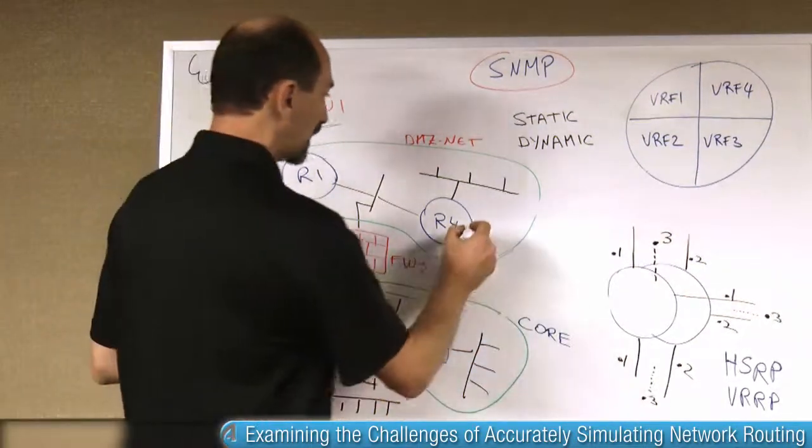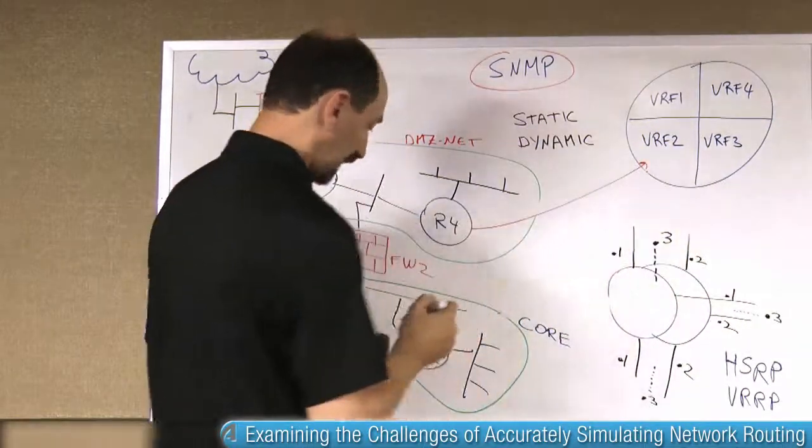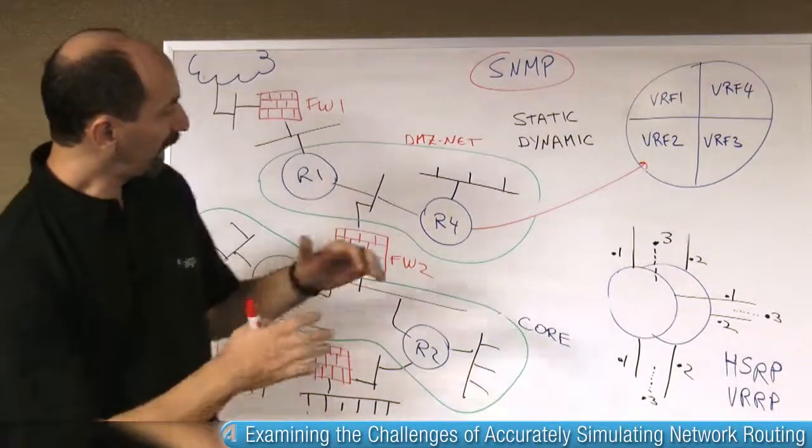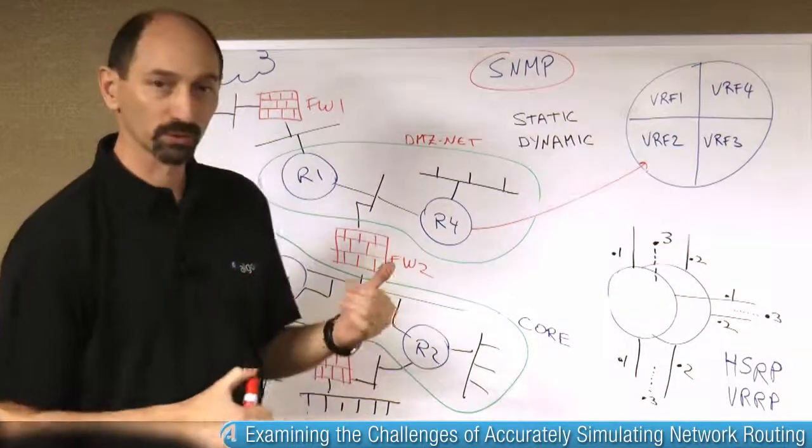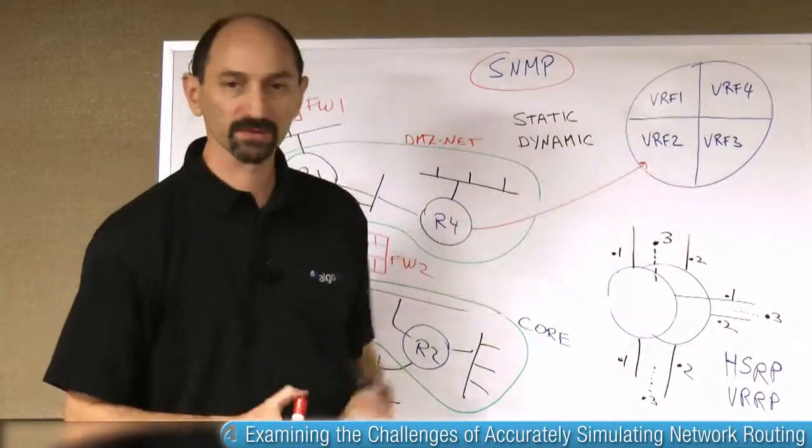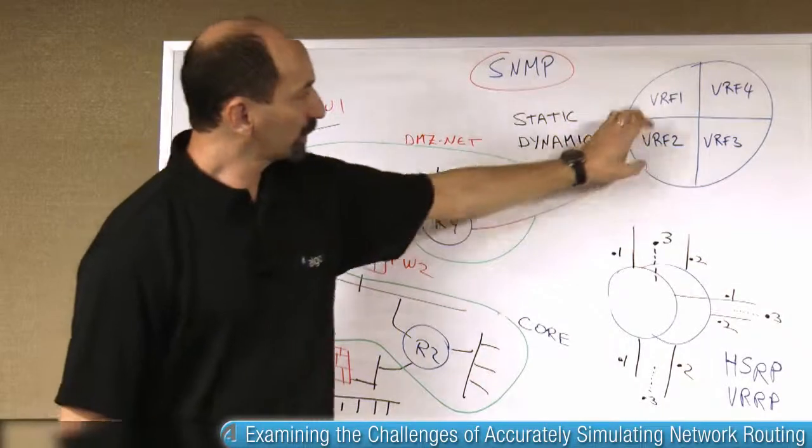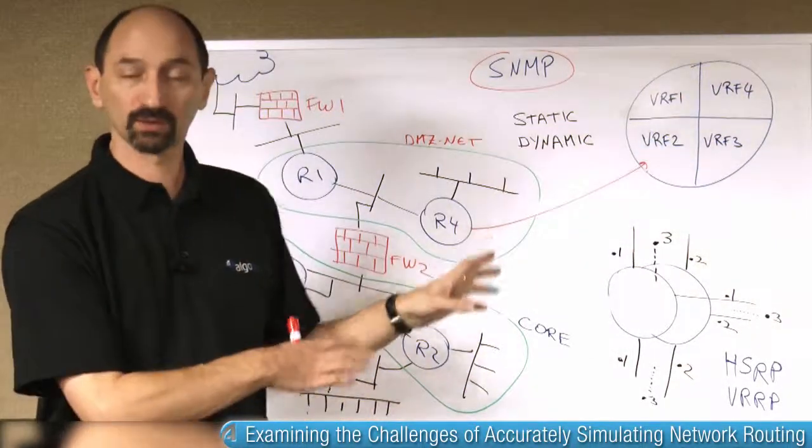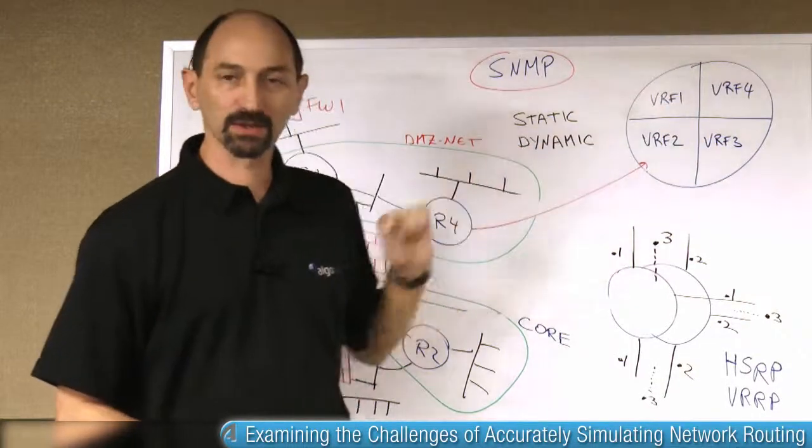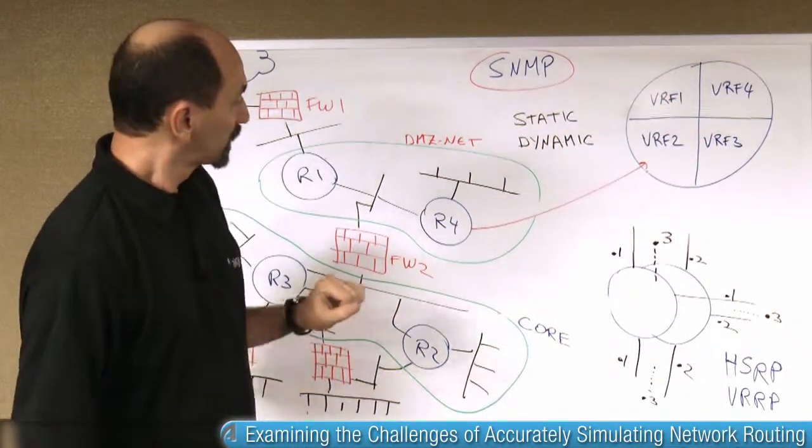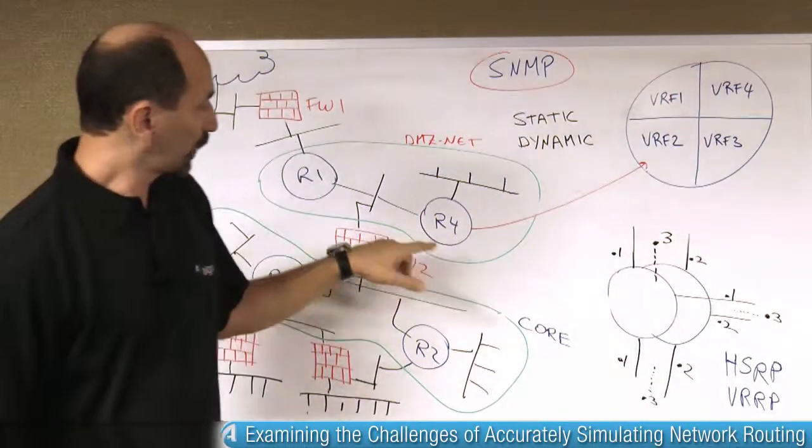inside it's actually organized as several different routing elements, virtual routing elements, or VRFs for short. And each of these separate VRFs has its own routing table, and it runs, it makes its own routing decisions.